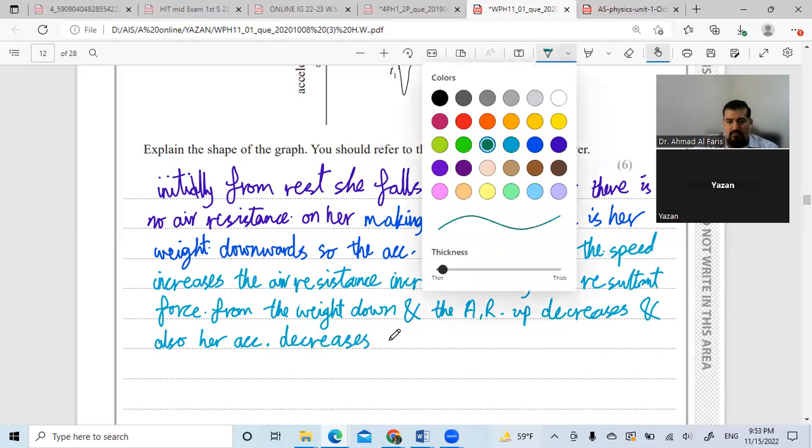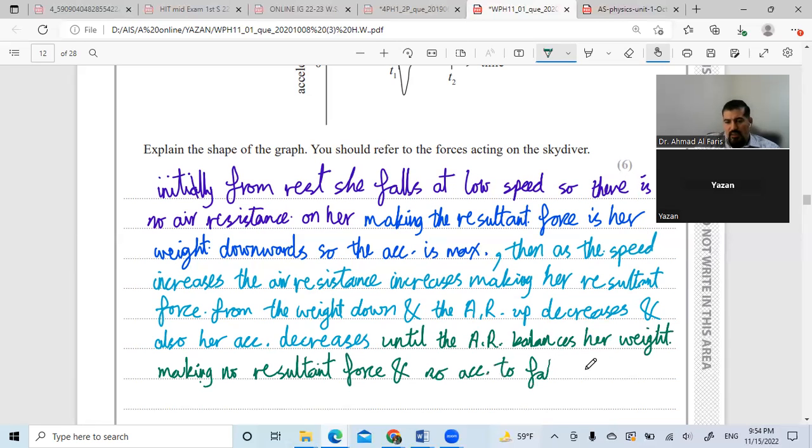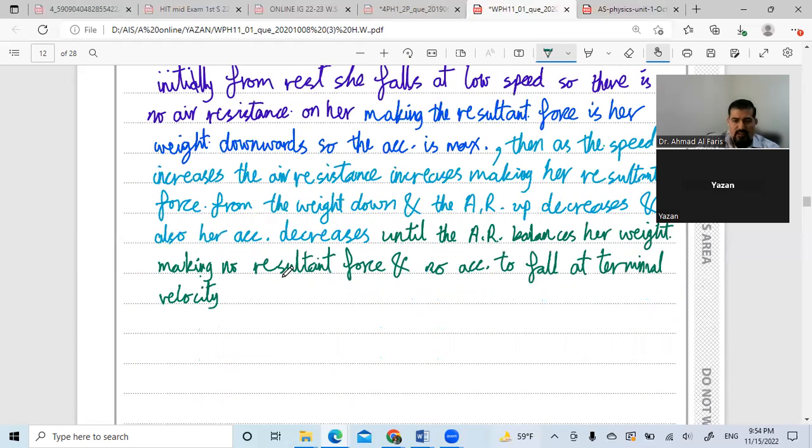Until the air resistance balances her weight, making no resultant force and no acceleration to fall at terminal velocity. So all this before T1, she opens the parachute.